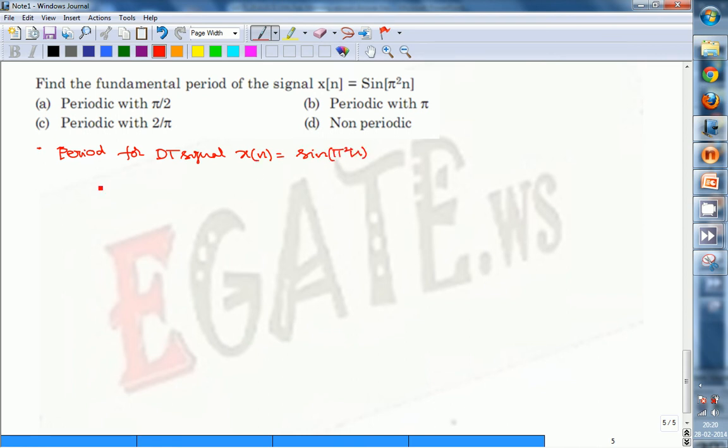We know that for a discrete time signal to become periodic, the fundamental period F₀ must be a rational number.